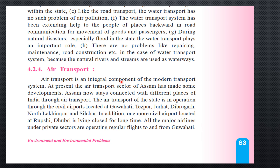Air Transport is an integral component of the modern transport system. At present, the air transport sector of Assam has made some developments, and Assam now stays connected with different places of India through air transport. The air transport of the state is in operation through civil airports located at Guwahati, Tejpur, Jorhat, Dibrugarh, North Lakhimpur, Silchar, and Rupsi near Dupri. Although the textbook states the Rupsi airport is closed, it was recently reopened, so that statement is now incorrect.